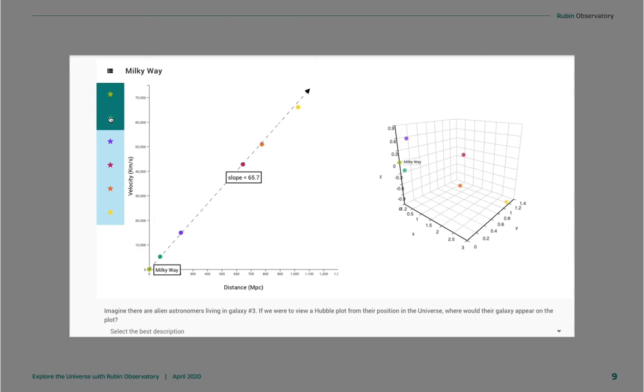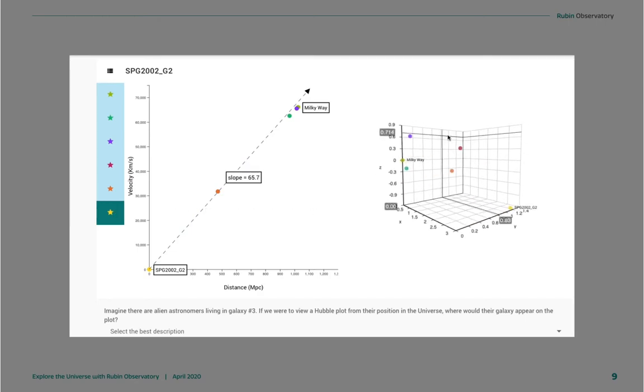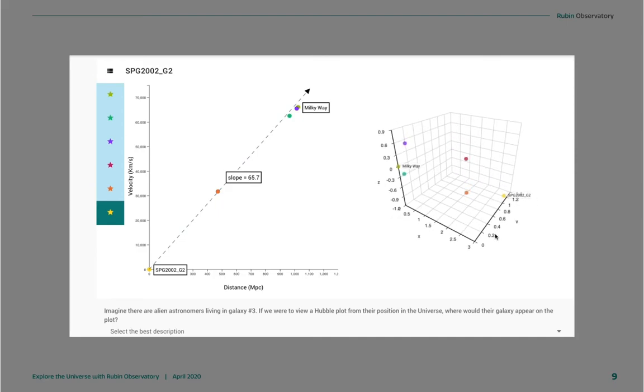As we go to a different galaxy, you can see that the dots rearrange their position, and we see that that galaxy is now at the origin. As we change through the galaxies, you can see that, in fact, the slope of the graph stays the same, and Hubble's law works everywhere in the universe. Yay! On the right is a 3D viewer showing the spatial positions of these galaxies.